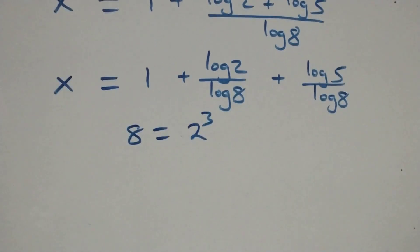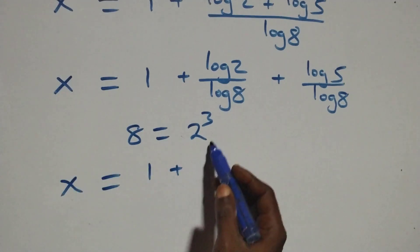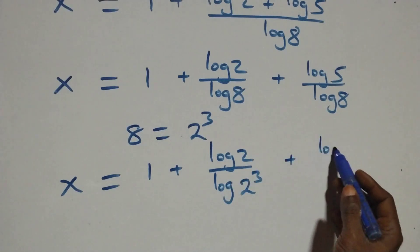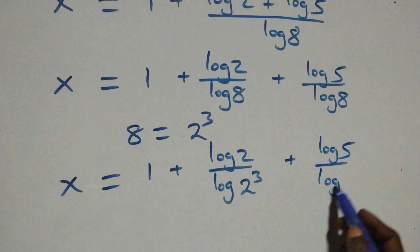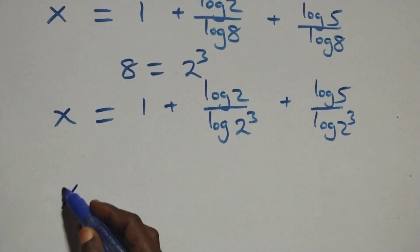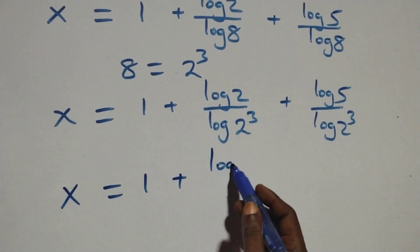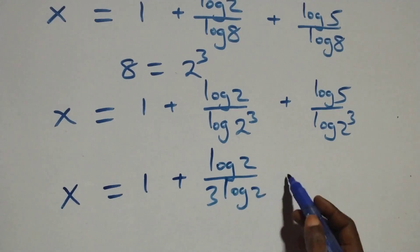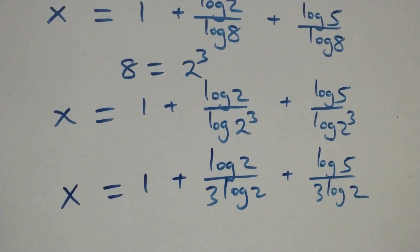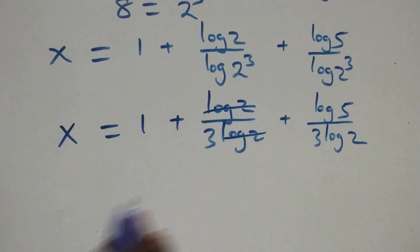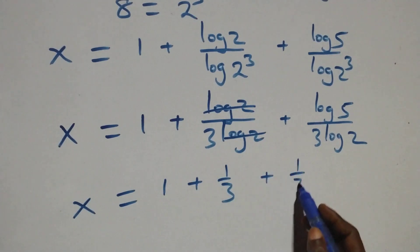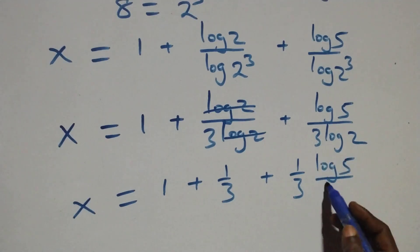Also, 8 can be written as 2 cubed. So x equals 1 plus log 2 over log(2 cubed) plus log 5 over log(2 cubed). Applying the power law of logarithms, the 3 comes out: x equals 1 plus log 2 over (3 log 2) plus log 5 over (3 log 2). The log 2 terms cancel, giving x equals 1 plus 1/3 plus (1/3)(log 5 over log 2).